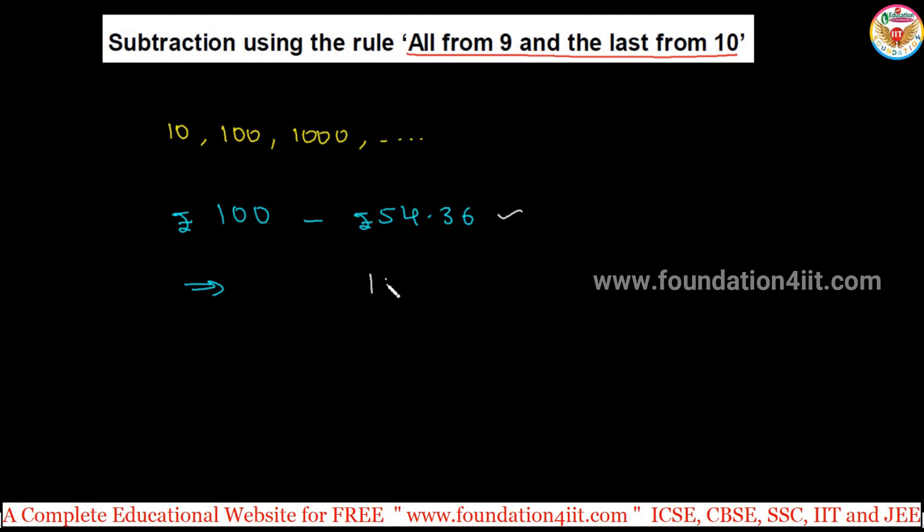From 100 rupees, we need to subtract 54.36. So 100 means 100.00 you can take, because under the point should be point. Again 54.36. So this technique you apply: all from 9 and last from 10.